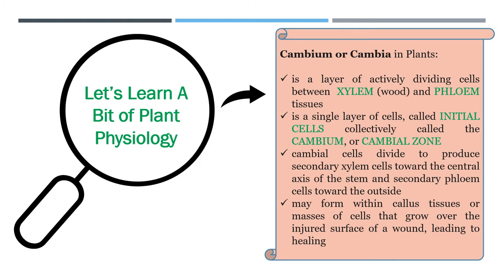The cambium layer may form within callous tissues — masses of cells that grow over the injured surface of a wound, leading to healing. This is the main reason why we remove the cambium layer when we do marcot cutting. The cambium layer should be properly removed so that adventitious roots can grow or develop on your marcot cut. If you don't remove it, the cuts will heal again by joining both ends, water will pass through once more, and a new bark will form — and the roots you expected won't appear.